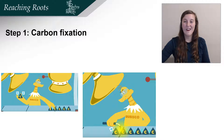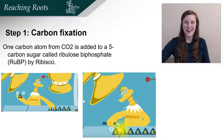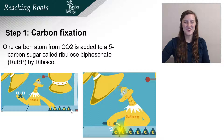Step one was all about carbon fixation. Rubisco — the duck in the video — took one carbon atom and added it to the 5-carbon sugar called RuBP. In the video they showed Rubisco welding it, but in actuality it's a molecular process that's bringing the two parts together.